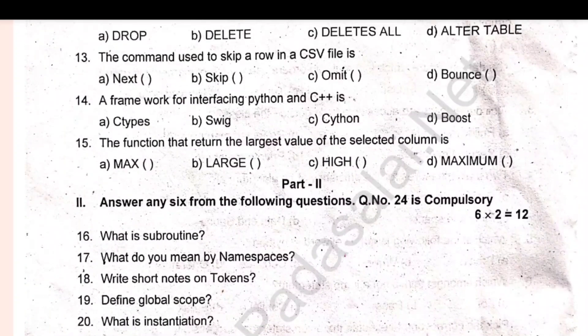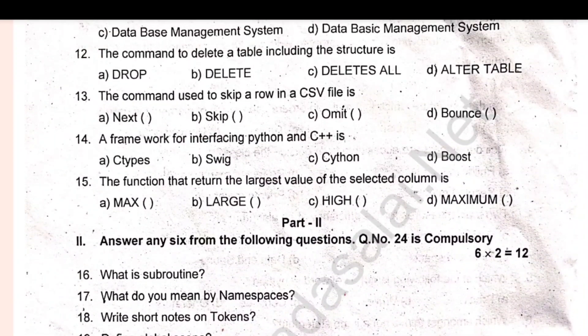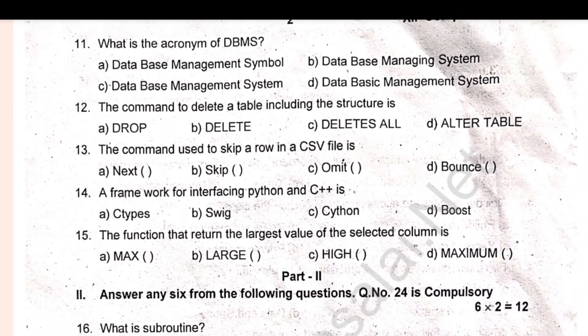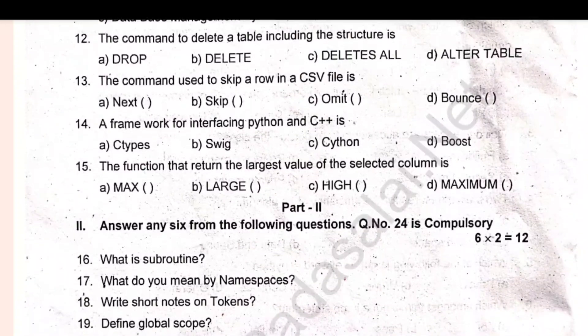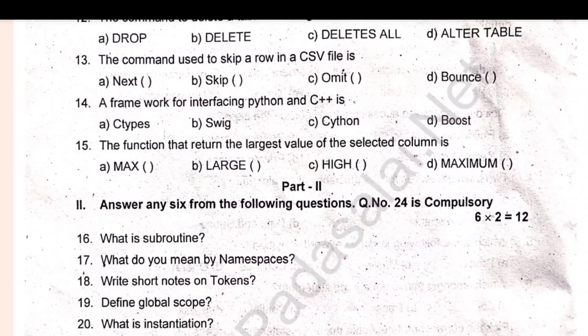The question of the 24th is compulsory. What is subroutine? What do we mean by namespace? Short note on tokens. Global scope. Instantiation. Control structure. Differentiate unique and primary key constraint.